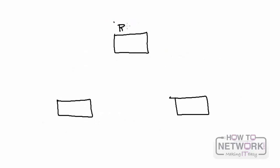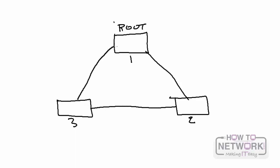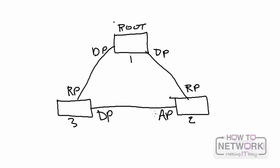In spanning tree, the root switch never has root ports — it only has designated ports. Non-root switches have root ports, which are the forwarding ports closest to the root bridge in terms of path cost. In a typical environment with switches 1, 2, 3, and a root switch 1: switch 2 and switch 3 both have root ports; switch 3 has a designated port which is a forwarding port on each LAN segment; and switch 2 has an alternate port — the best alternate path to the root bridge on the same segment.